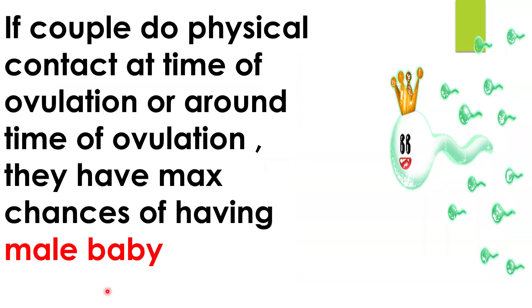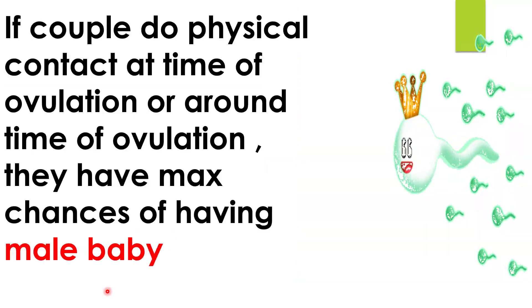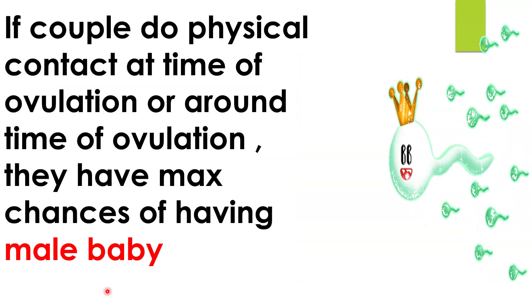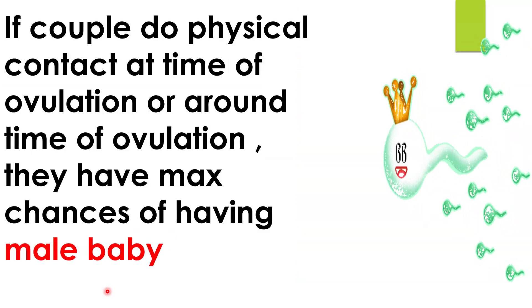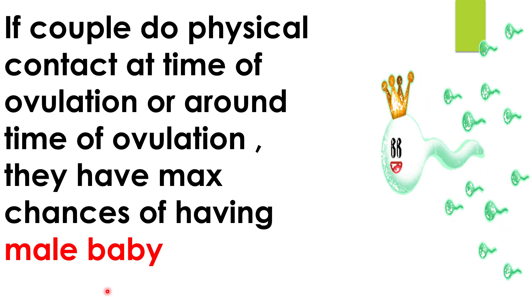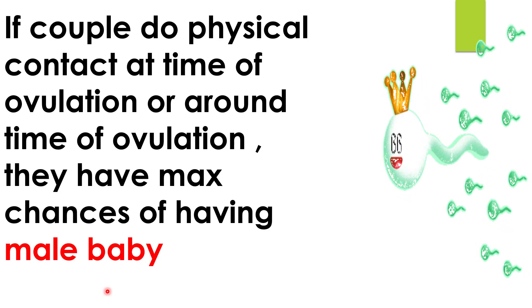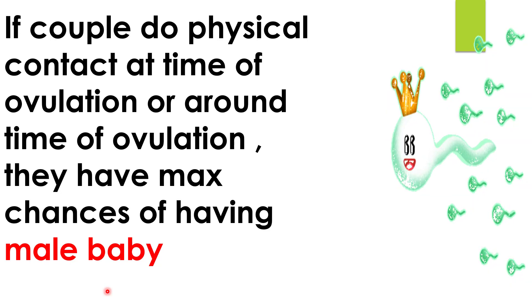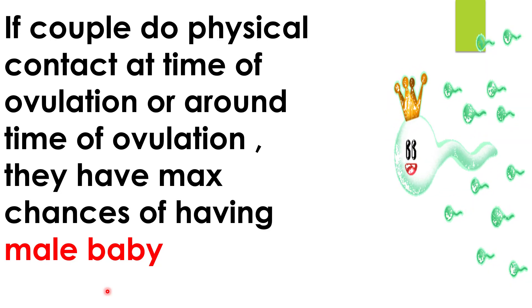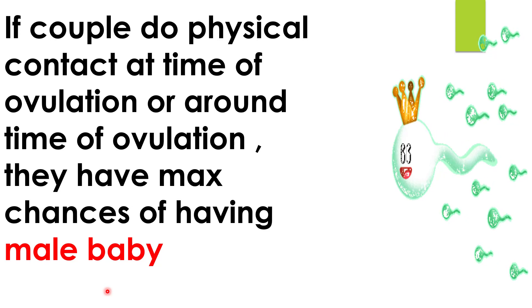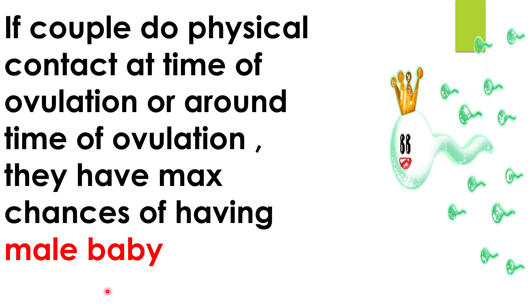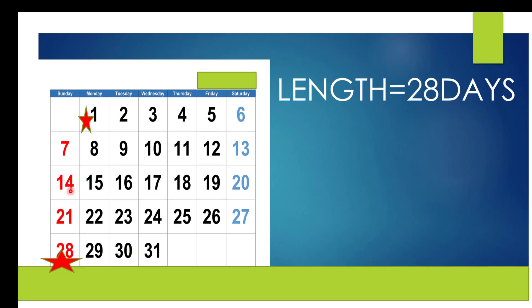So if a couple has physical contact at the time of ovulation or around the time of ovulation, they have the maximum chances of having a male baby. That is the basic concept. So if the length of your cycle is 28 days,